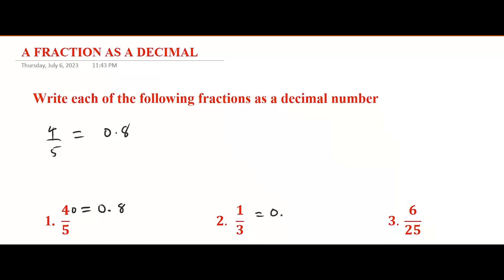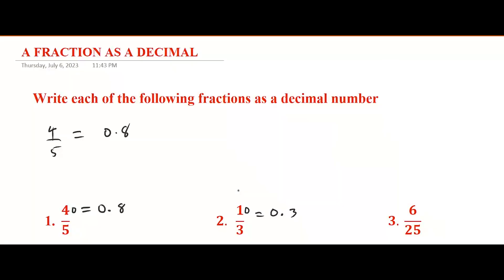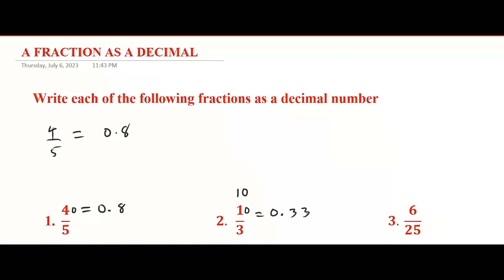For 1/3: three goes into one — impossible — so write zero and a decimal point, then add zero to one, making it 10. Three goes into 10 three times, giving nine, with remainder one. You continue adding zero to the remainder, so add zero to one making 10 again. Three goes into 10 three times, remainder one again.